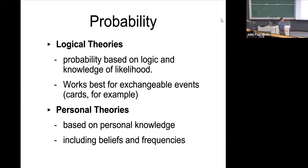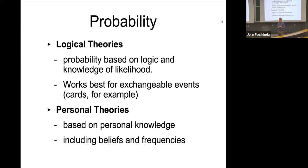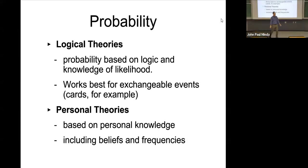Third are personal theories, based on personal knowledge that goes beyond frequency information. This might include some frequency data but also beliefs, hopes, and desires about the likelihood of something happening. For example, feeling like 'this is my lucky day' is a personal belief that may have no grounding in frequency or logical theories. Exam questions might ask you to identify which type of theory a given example represents.